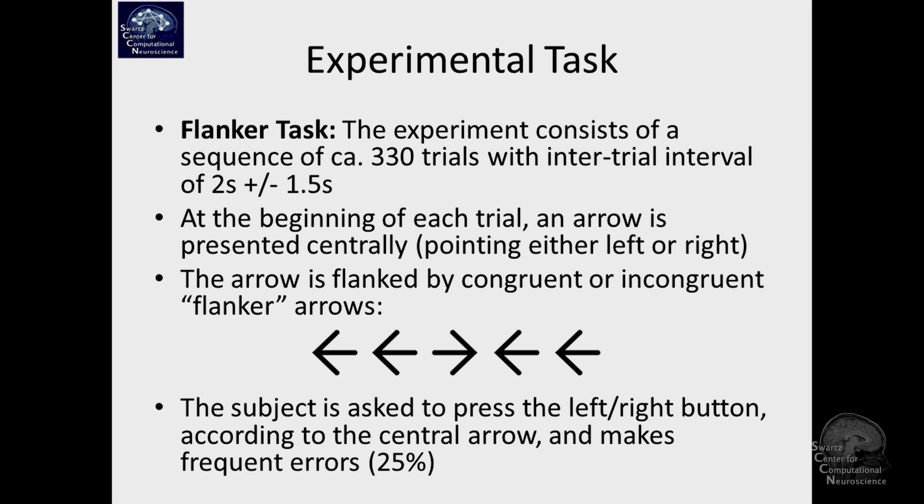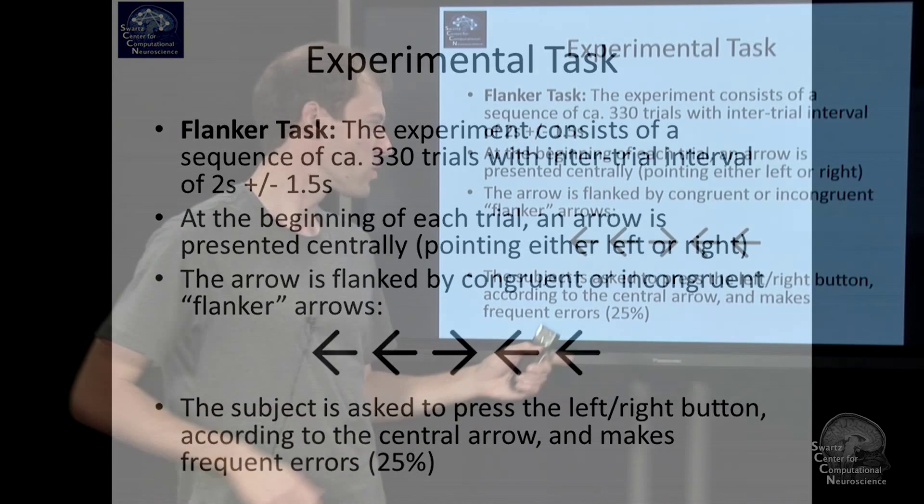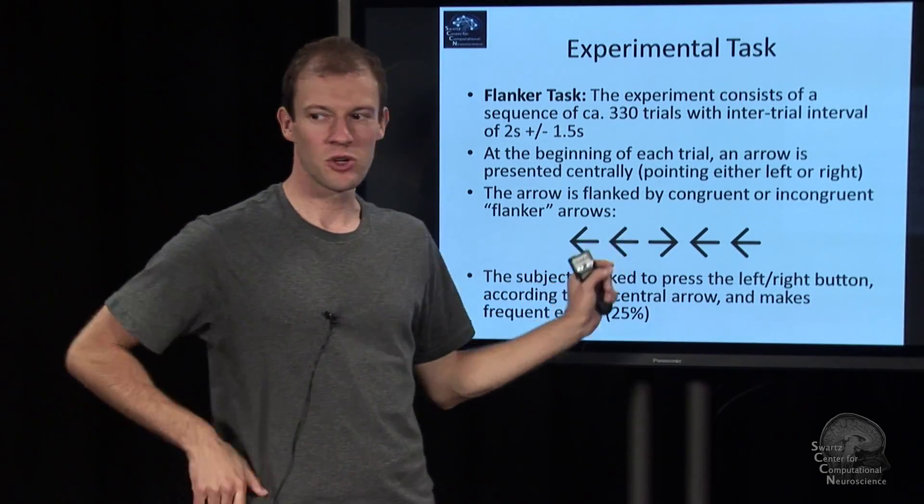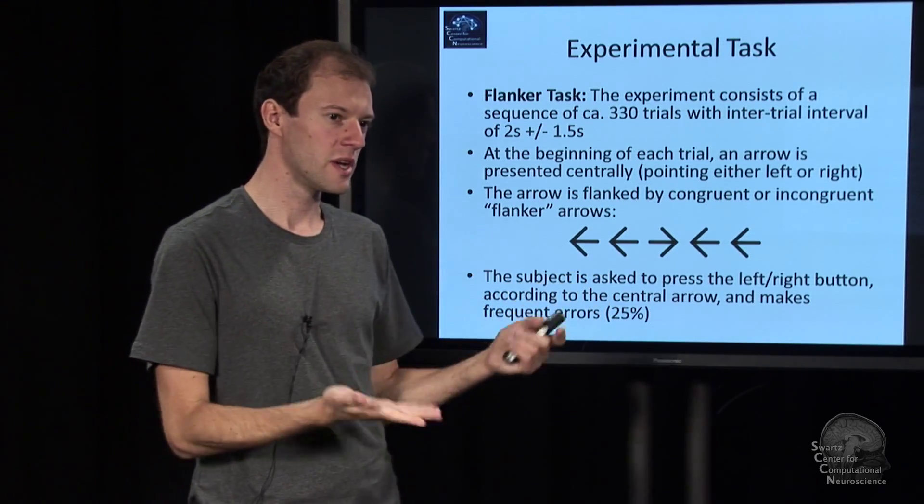And that arrow is flanked by either congruent, same direction, or incongruent flanker arrows. Actually the flankers appear usually shortly before the actual arrow.